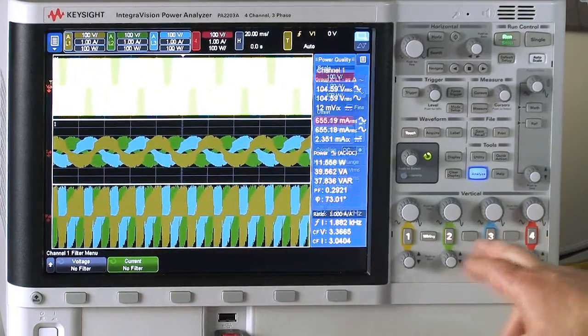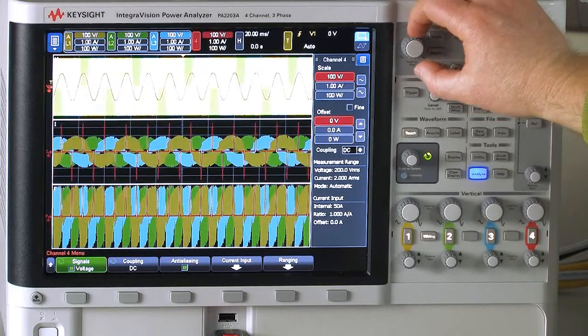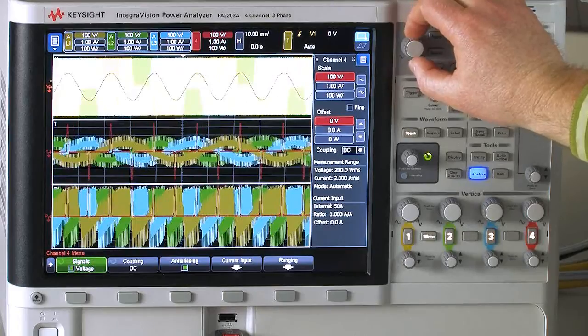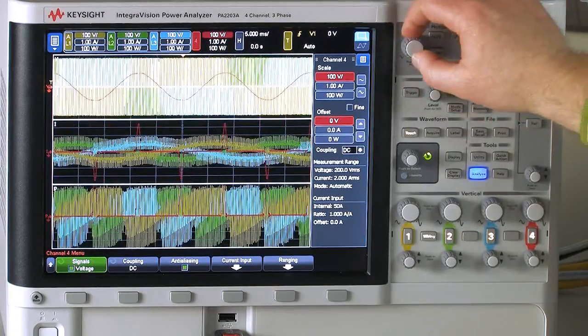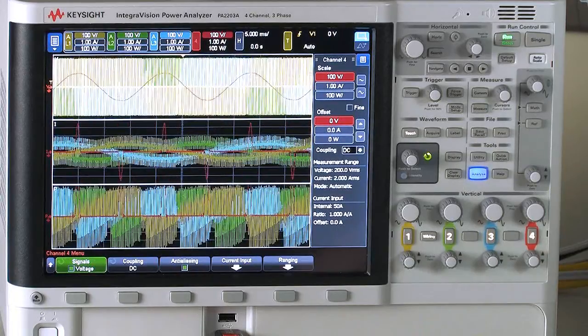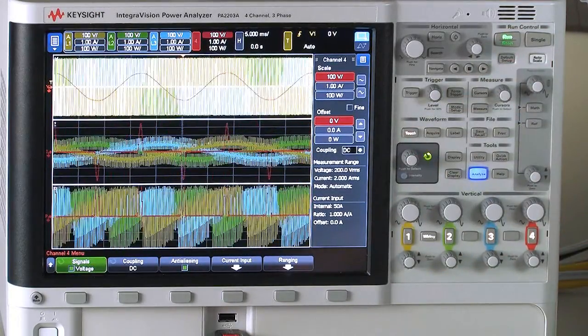And I can turn on channel four here and that's actually my sine wave input. That's the 60 hertz, 120 volt line in. And you can see it's actually being rectified. You can see the first thing it does is go directly into a rectifier based on that current pulse. That's probably what's happening inside the device. There's no power factor correction.